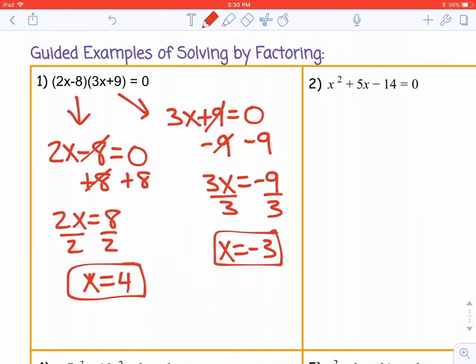So when x equals 4 or negative 3, we say that the roots, zeros, these are x-intercepts, or solutions. All of those words mean the same thing when we're solving quadratics. So these numbers would qualify for if they ask you for any of those four things.